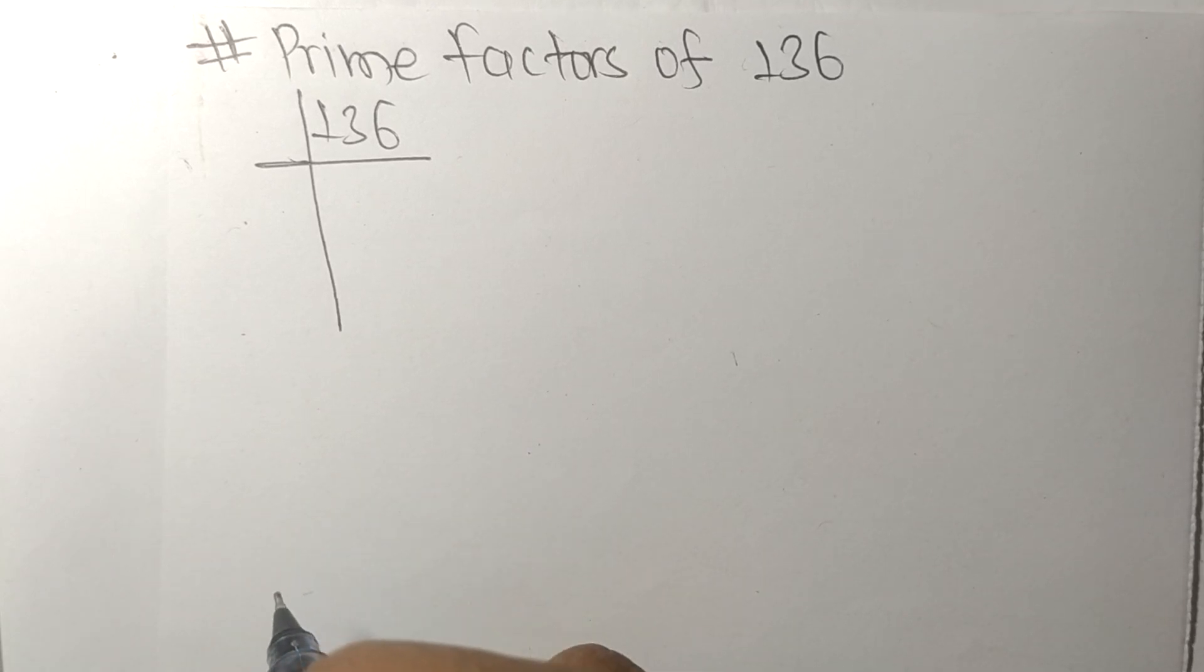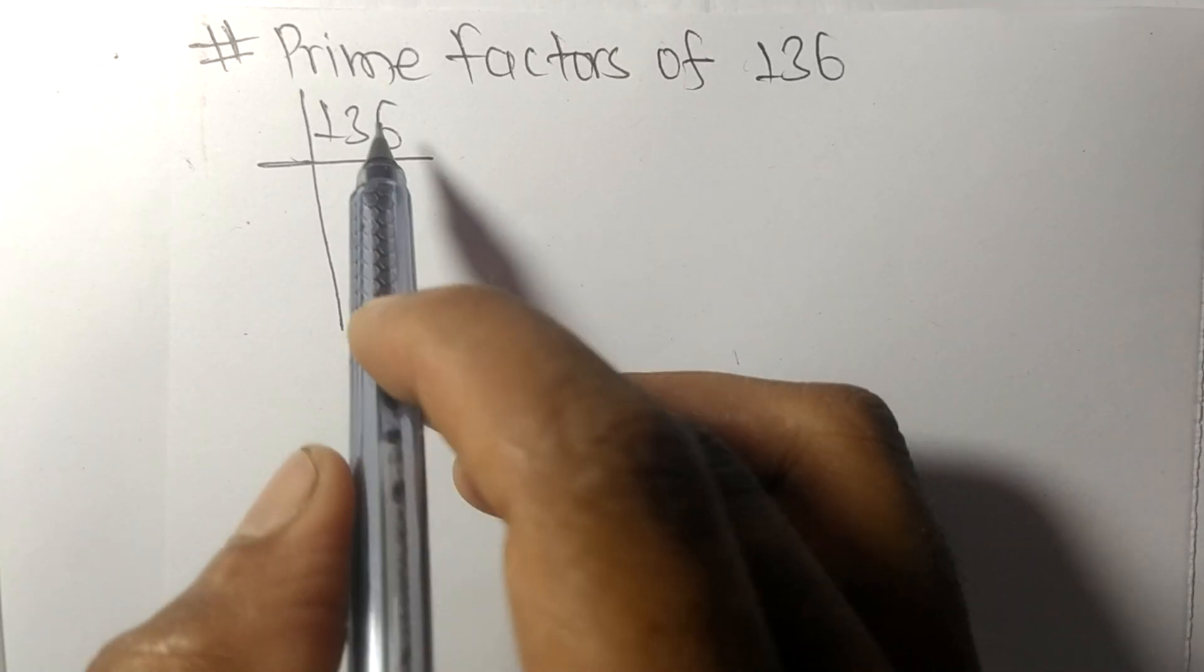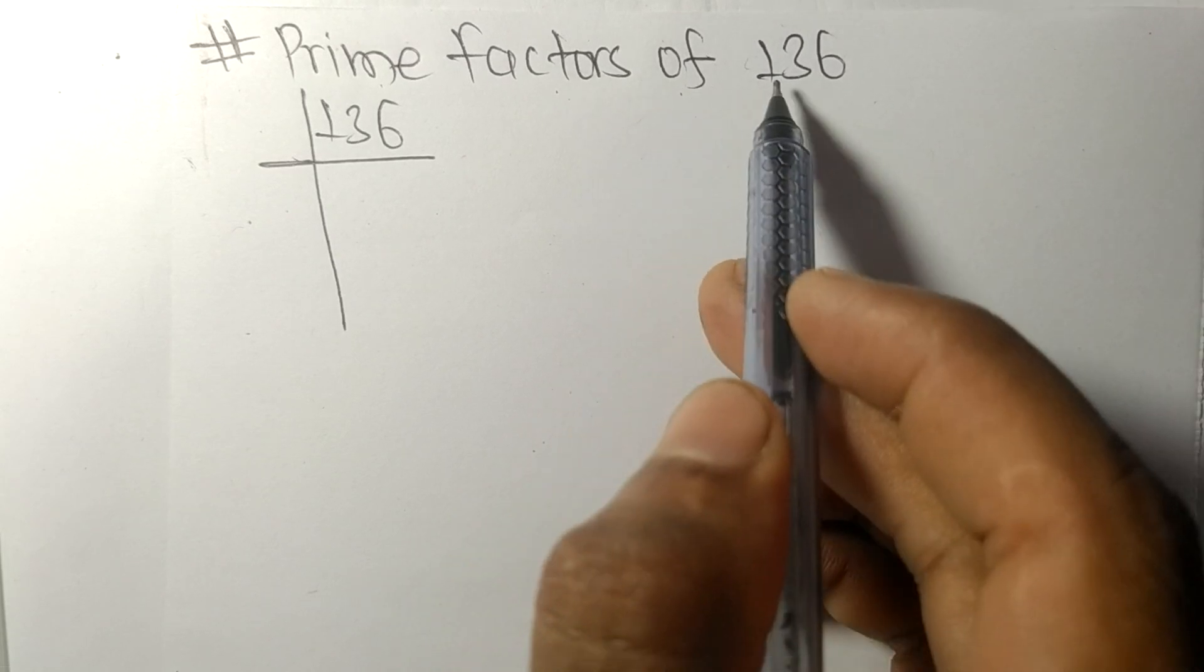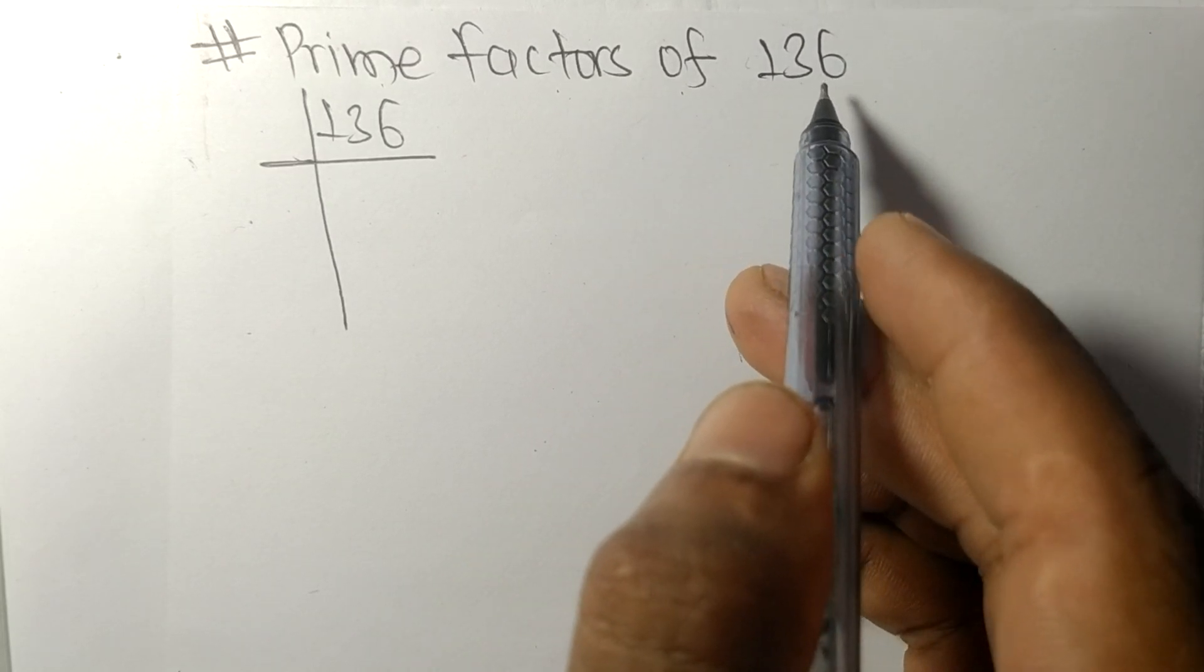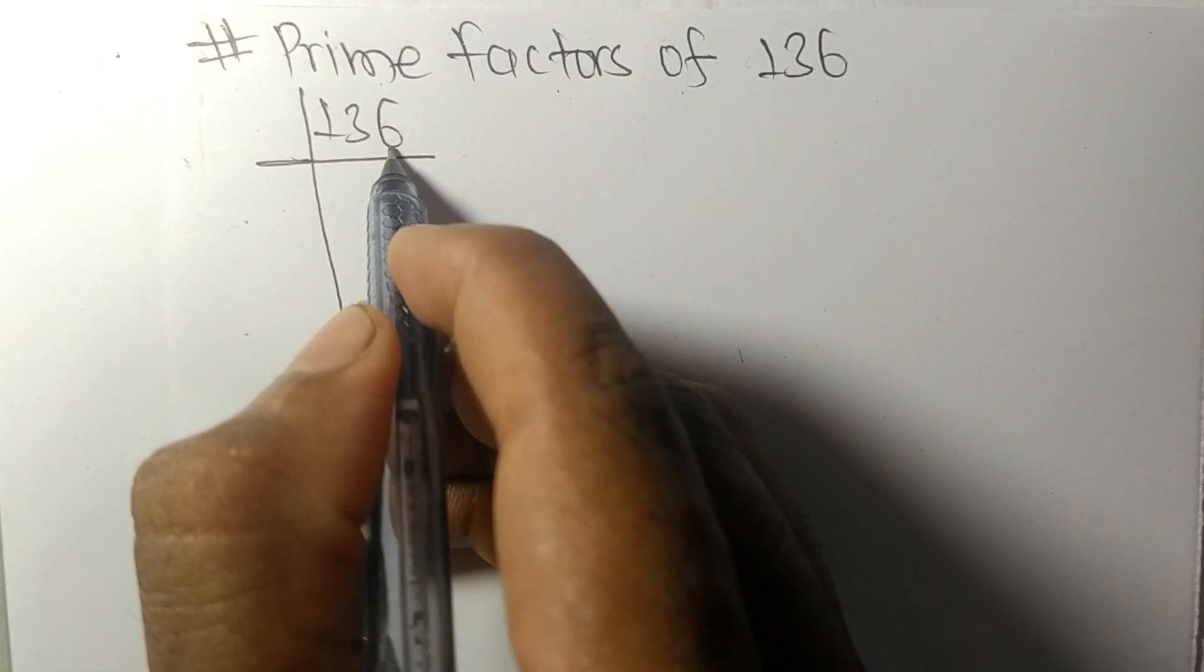So today in this video we shall learn to find the prime factors of 136. So it contains an even number 6 as the last digit, so this whole number is also divisible by 2.